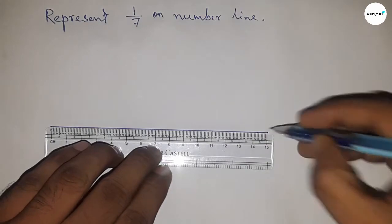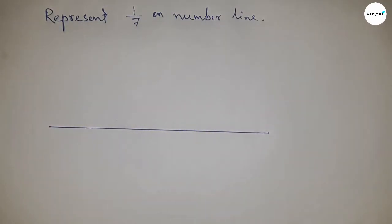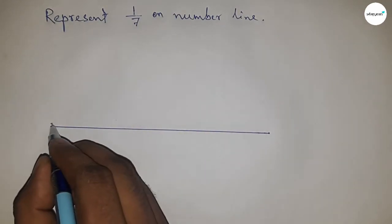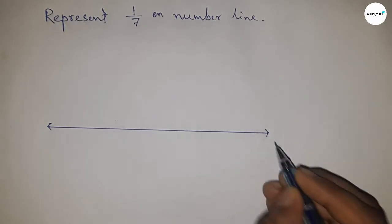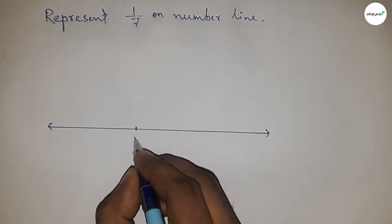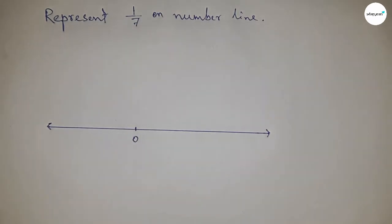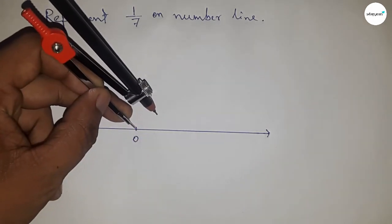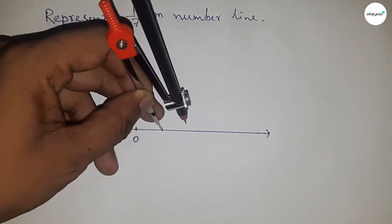number line. Draw a line of any length and mark the ends with arrows, then place zero here. Next, we'll mark the numbers on the line using a compass, so take any length